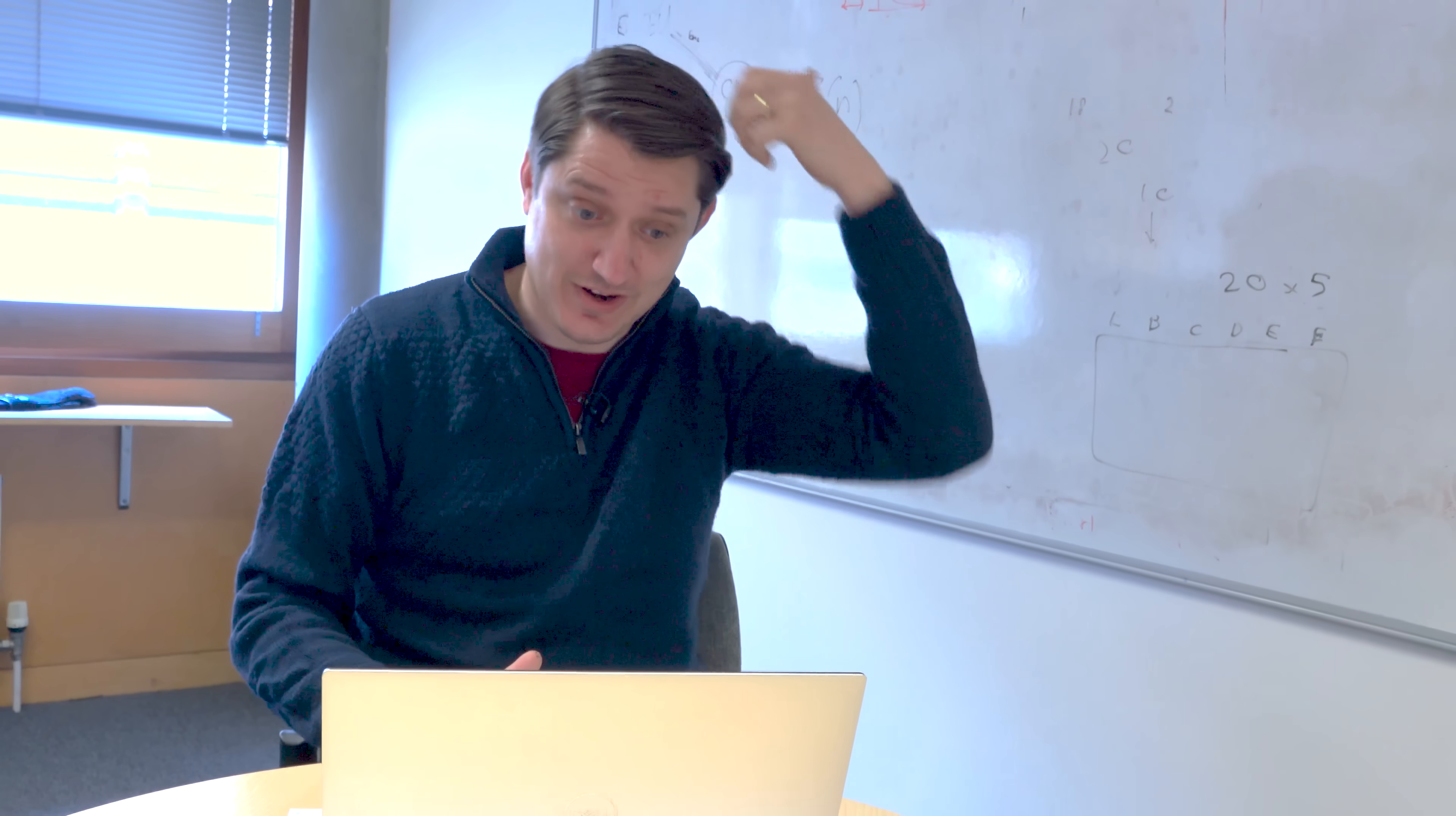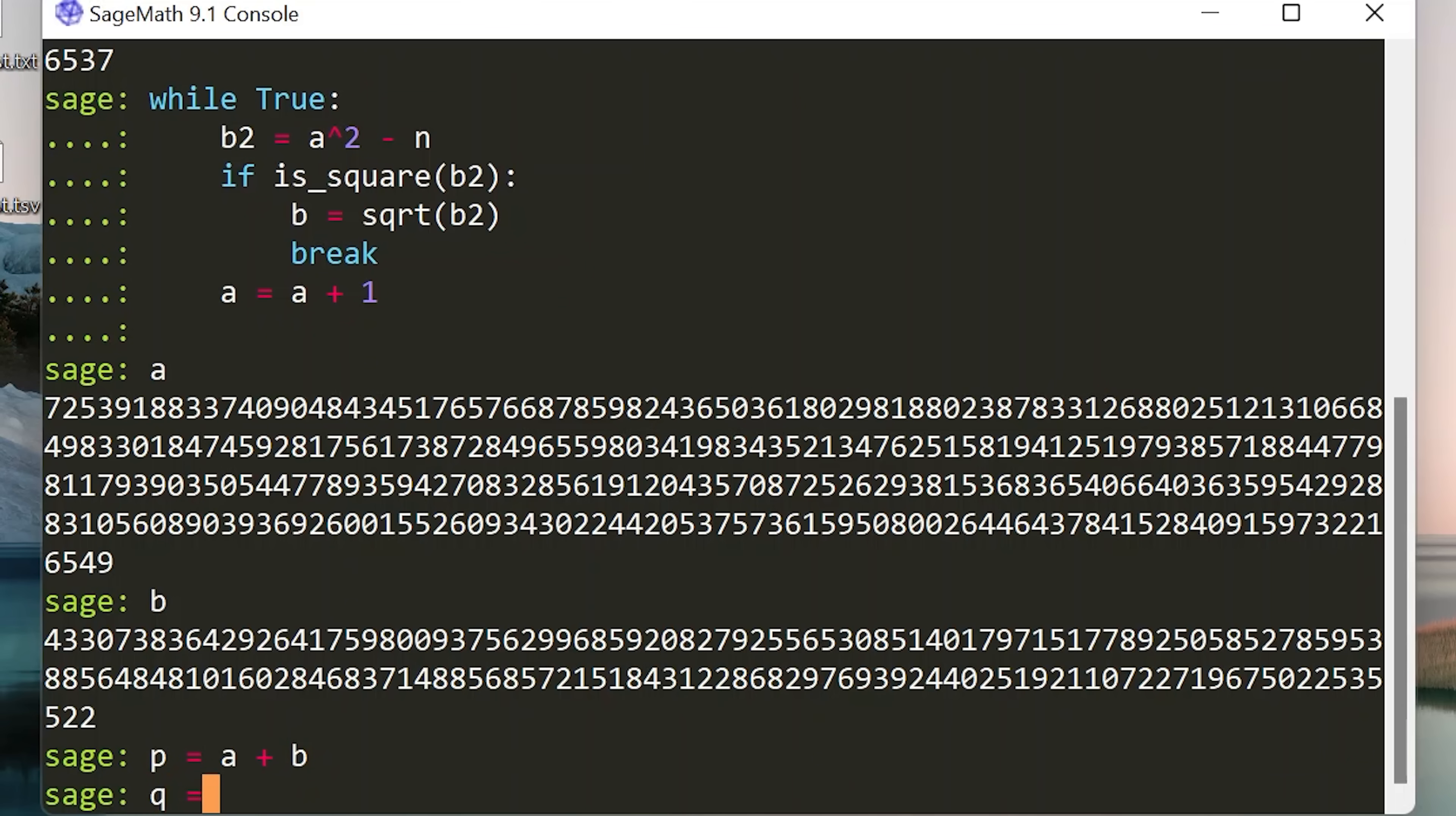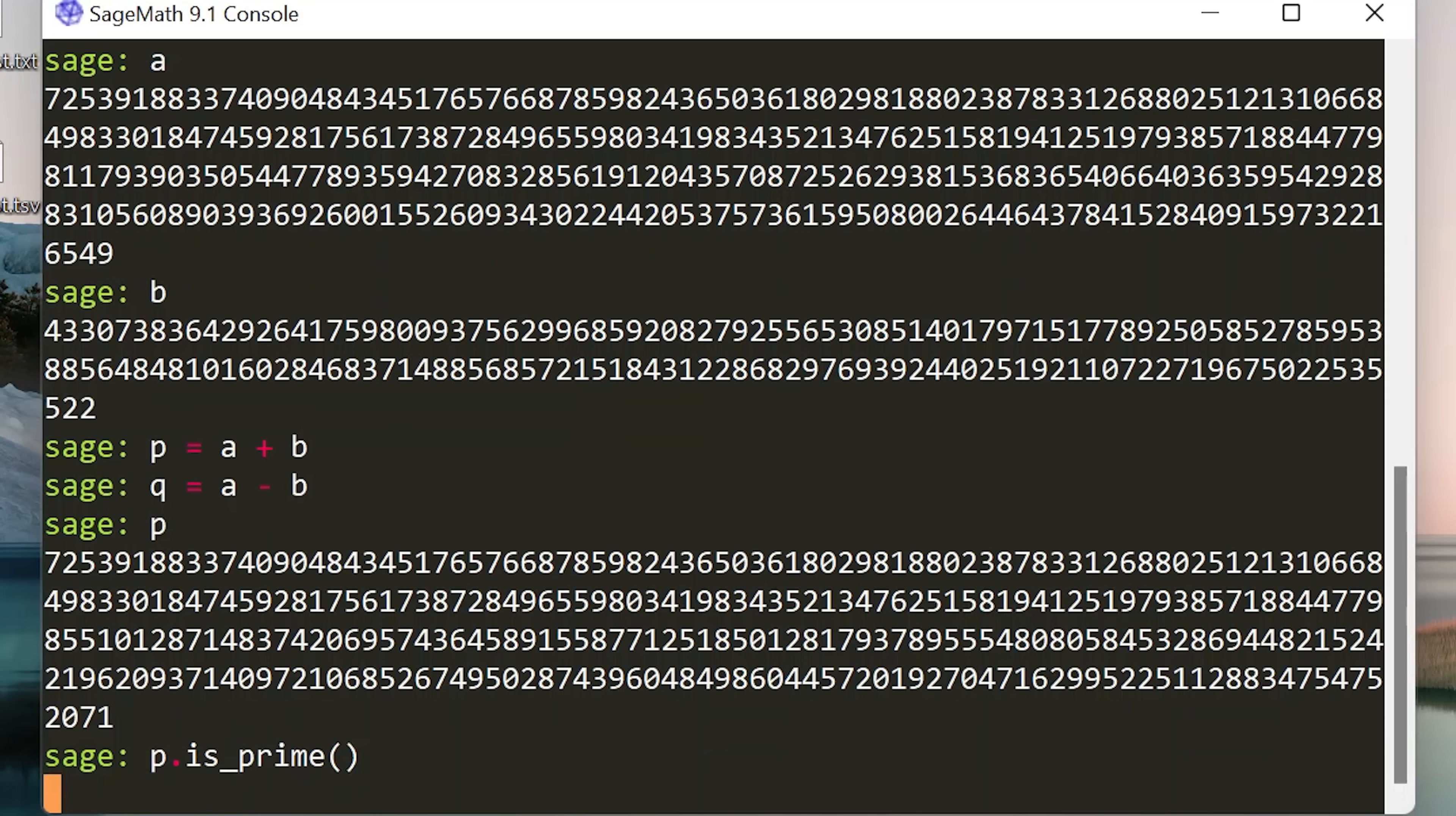So I can say A is that number, B is this number. And so we can now say P is equal to A plus B, and Q is equal to A minus B. And then we can just do a check. So P is this. Is P a prime? P dot is prime. Thinking about it. Primality test. Witness numbers.